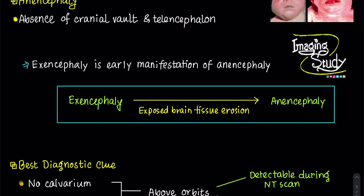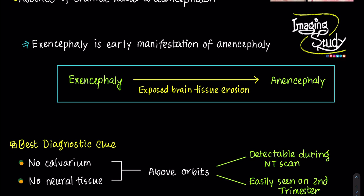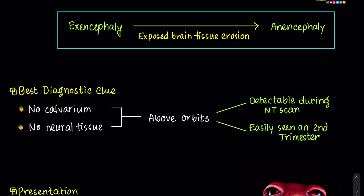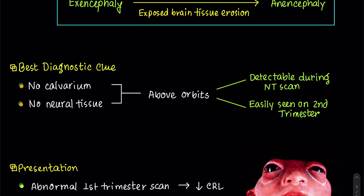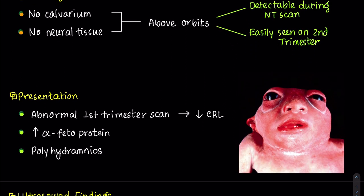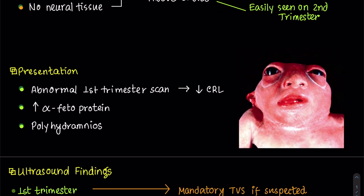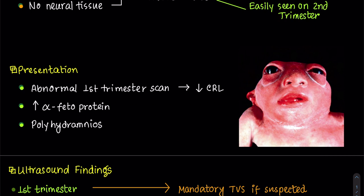A small amount of dysmorphic tissue may still be present in the second trimester. No calvarium with absence of neural tissue above the orbits will be the best diagnostic clue, which may be detectable at the time of a nuchal translucency scan and should never be missed with routine views in the second trimester. Patient usually presents with an abnormal first trimester scan with CRL lower than expected for age and deformed head. Maternal serum alpha-fetoprotein is elevated. Polyhydramnios is a common finding.